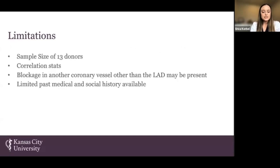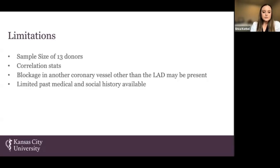We did have some limitations in this study. One limitation is a limited sample size of only 13 donors, which prevented complete correlation statistics. Additionally, we only evaluated arteries at specific locations — uterine, LAD, and common carotid at the bifurcation point — so other blockages in other coronary or uterine vessels were not investigated. There is also limited past medical and social history available from the donors.